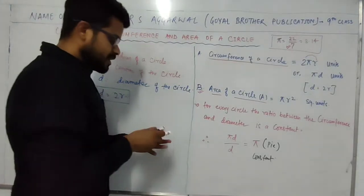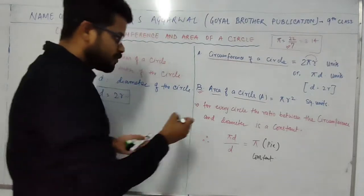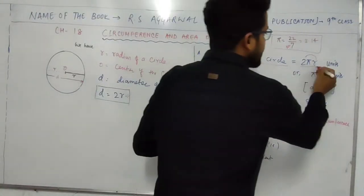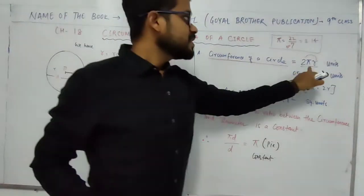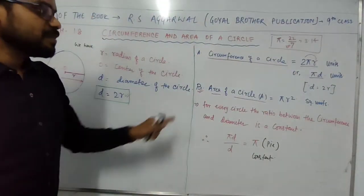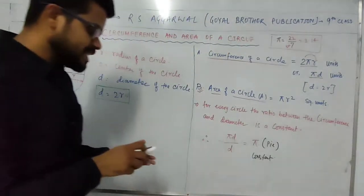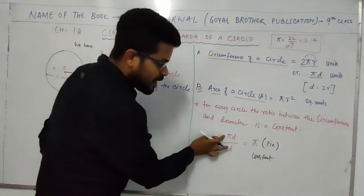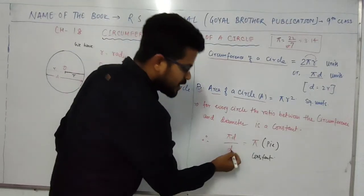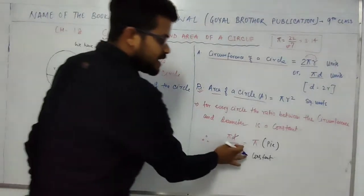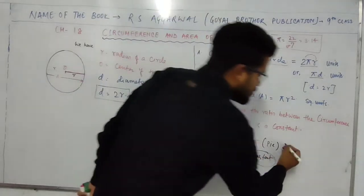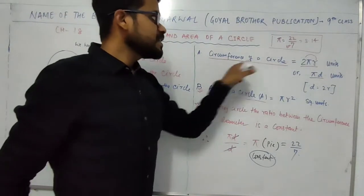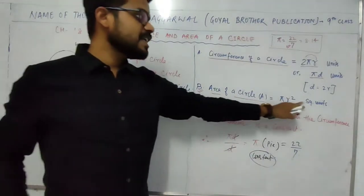Now this is an important point — always remember it. For every circle, the ratio between the circumference and the diameter is constant. Circumference is 2πr or πd. So circumference divided by diameter is πd divided by d, and this d and d cancel out, leaving pi. This pi is a constant, and the value of pi is 22 by 7. So always remember: circumference is 2πr and area of a circle is πr².